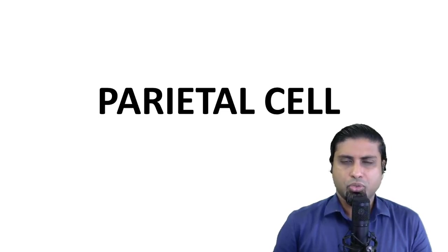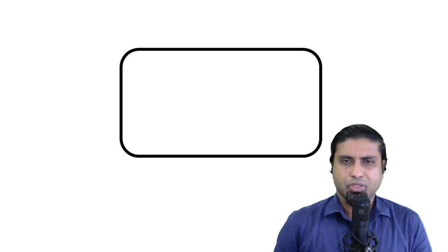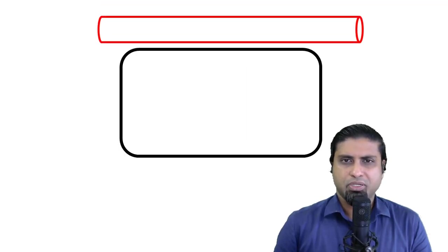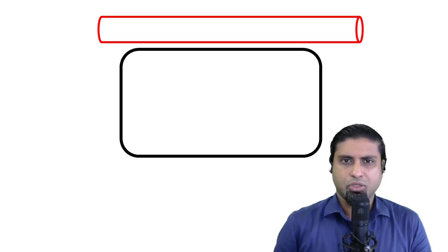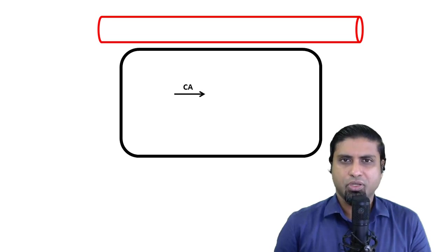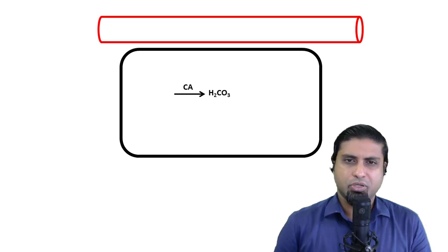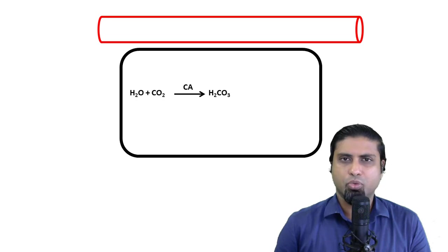Let us go straight into the role of the parietal cell. Here is a parietal cell with the capillaries on the basolateral aspect and the lumen of the stomach on the luminal aspect. The parietal cell has got an enzyme which we call carbonic anhydrase. Carbonic anhydrase is responsible for the formation of carbonic acid. The substrates needed are found ubiquitously in all cells and they include carbon dioxide and water.